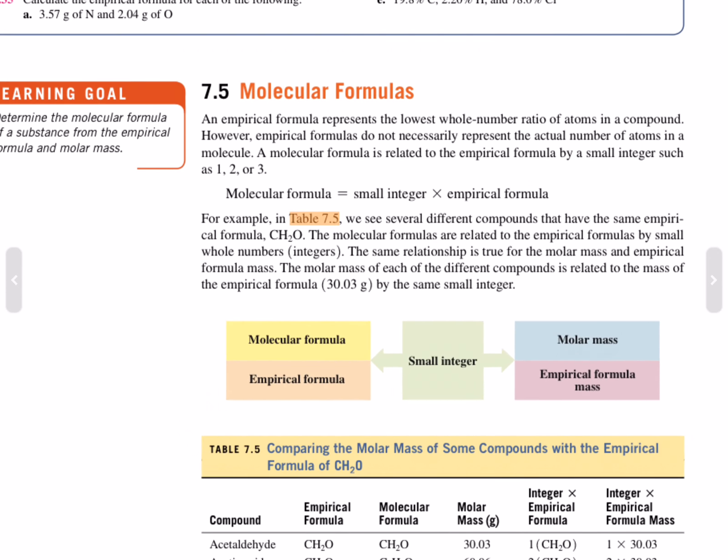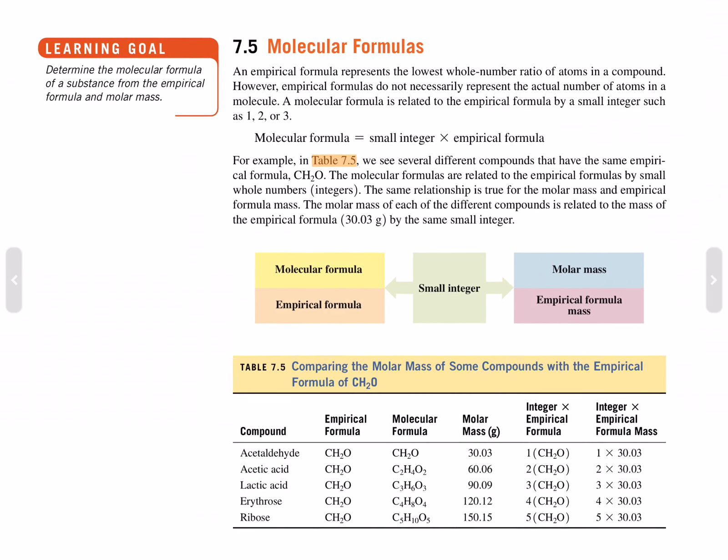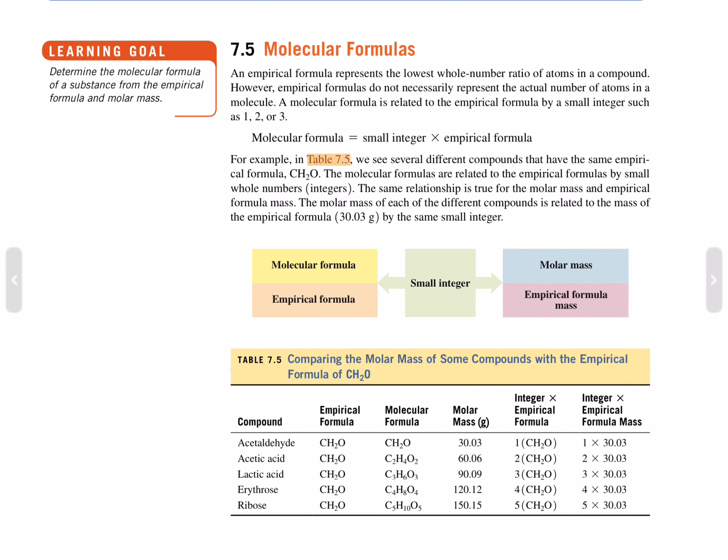Section 7.5: Molecular Formulas. An empirical formula represents the lowest whole number ratio of atoms in a compound. However, empirical formulas do not necessarily represent the actual number of atoms in a molecule. A molecular formula is related to the empirical formula by a small integer such as 1, 2, or 3. So the molecular formula equals the small integer times the empirical formula.